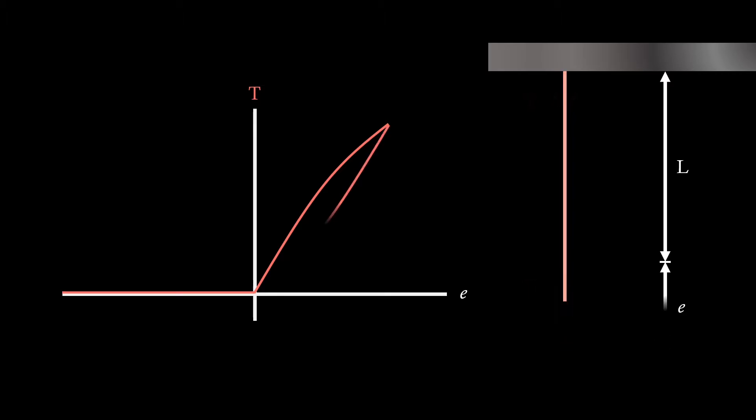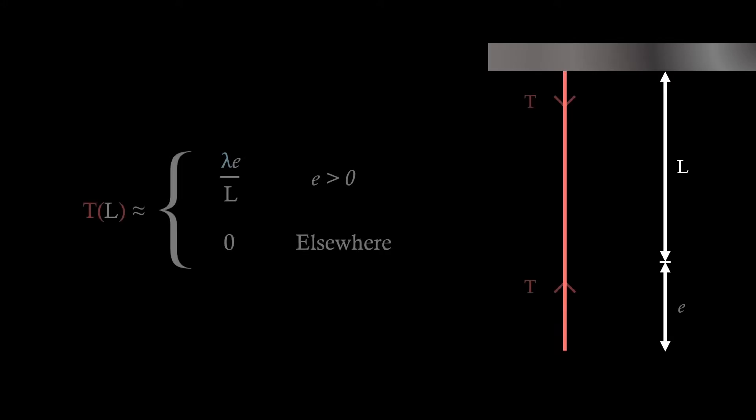Then as the extension returns to zero, we see that we get this non-linear curve, saying that the tension decreases quicker as extension reduces. So that plot is actually just Hooke's Law. If we write this mathematically, we find that the tension equals lambda times the extension over the natural length when the extension is positive, and zero elsewhere. This lambda value is the elastic modulus of the string, which varies depending on the material.